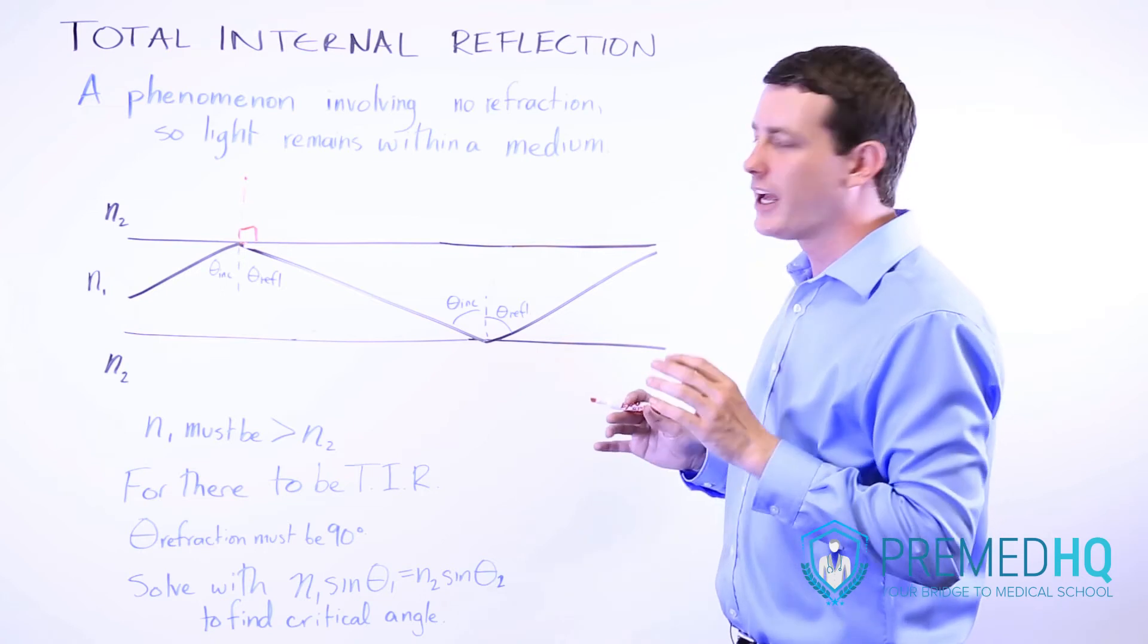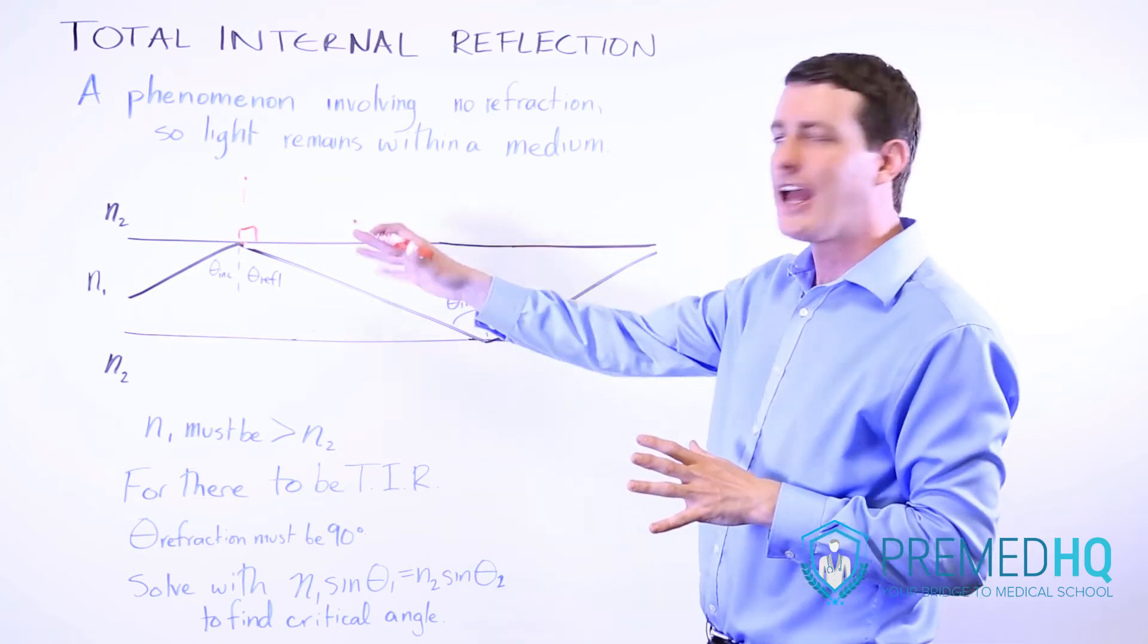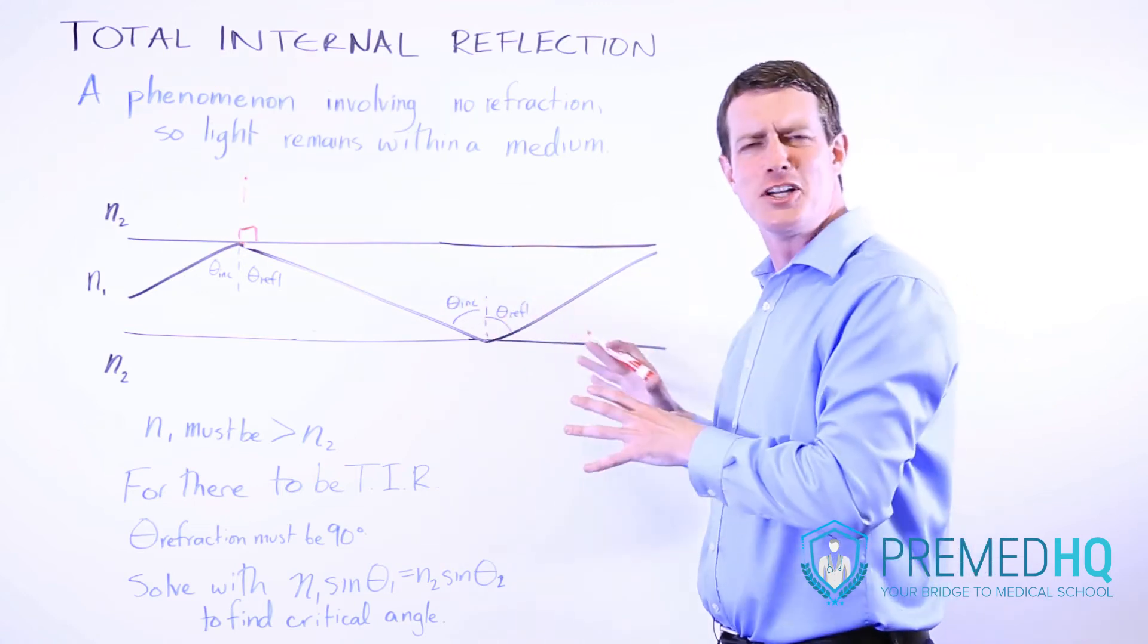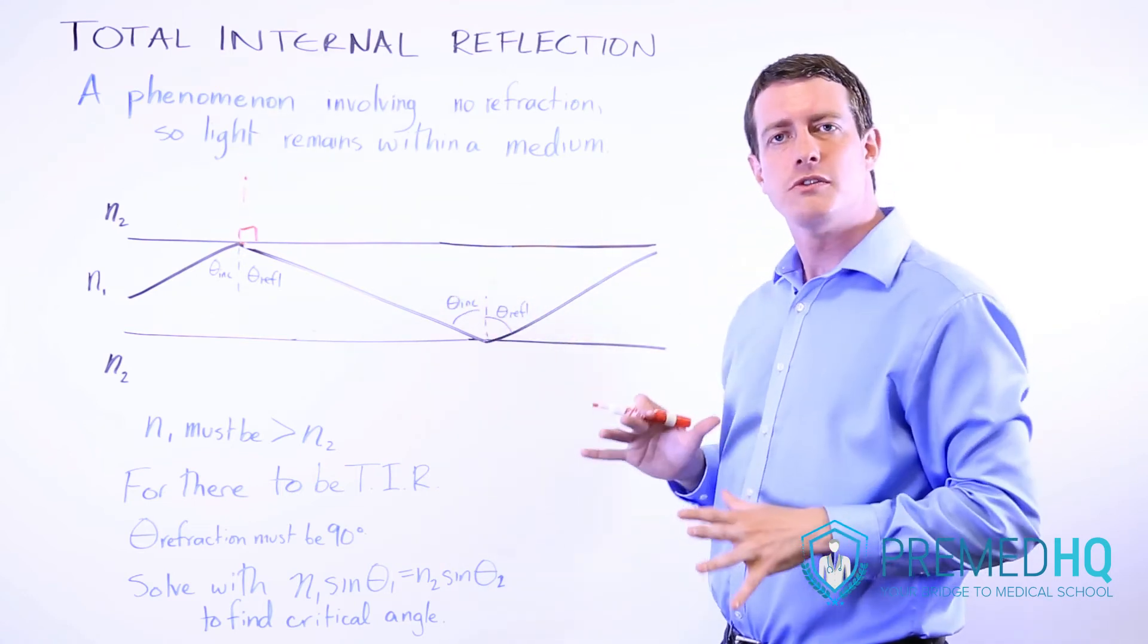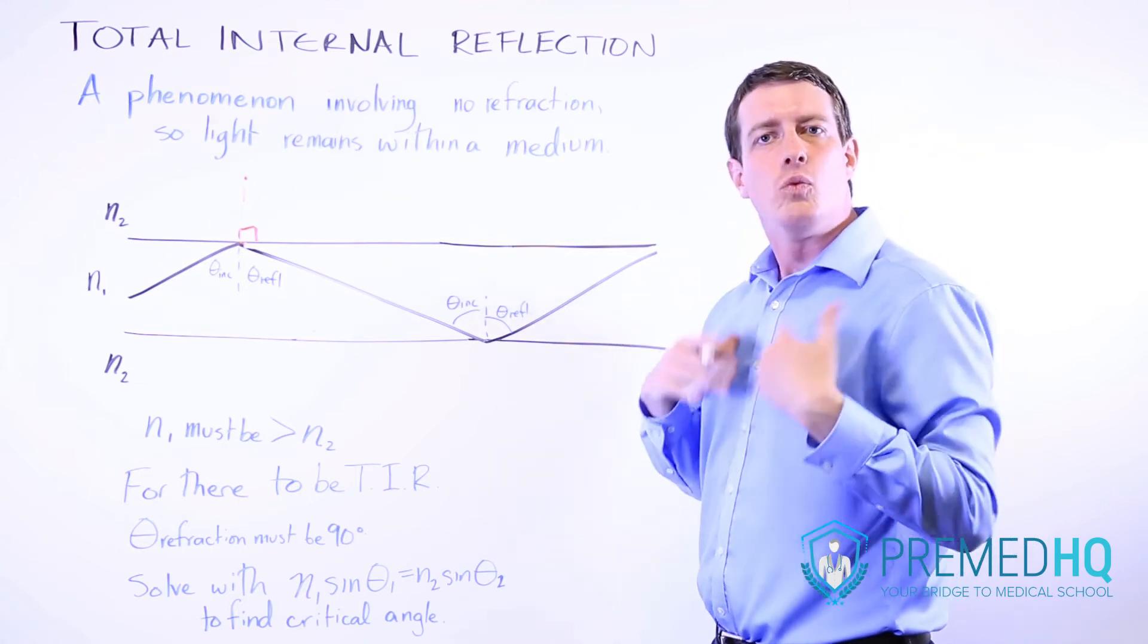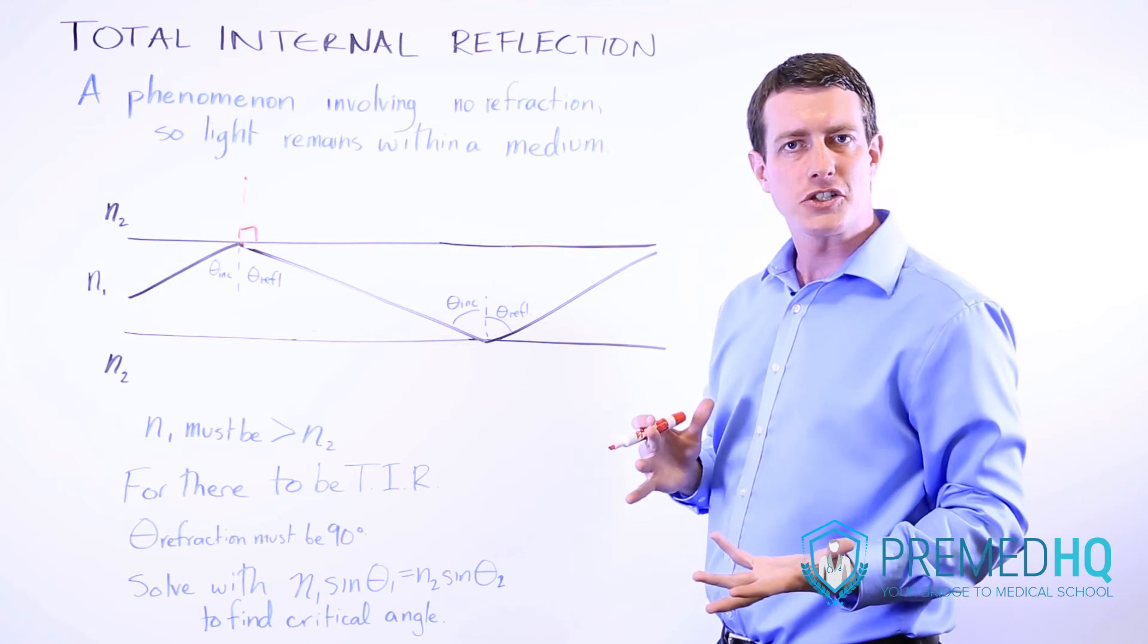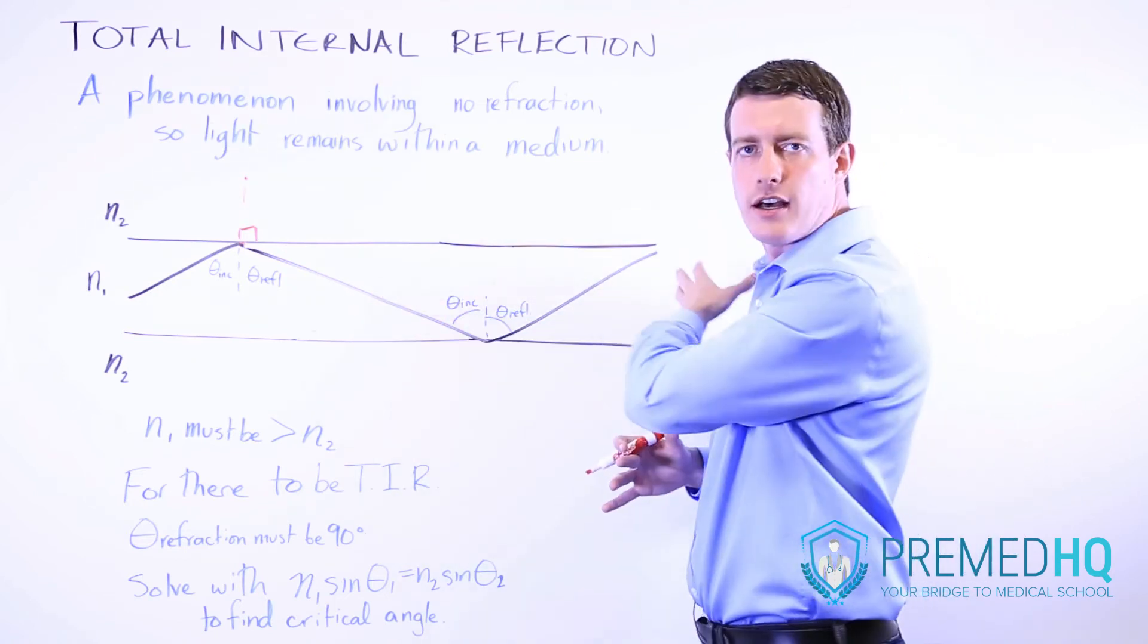That angle, the angle at which you first see total internal reflection and where the angle of refraction is 90 degrees, that angle is called the critical angle. And as soon as you find the critical angle, then any greater angle than that will exhibit total internal reflection. And that means that the light will stay contained within the medium and not escape whatsoever.